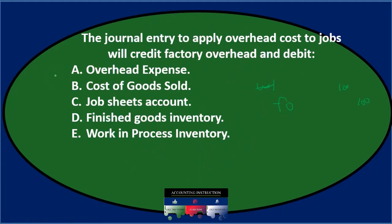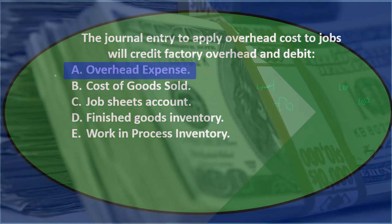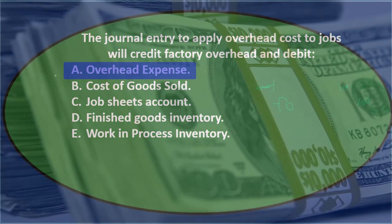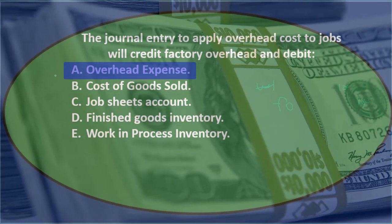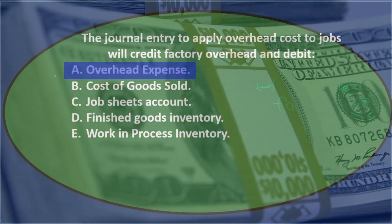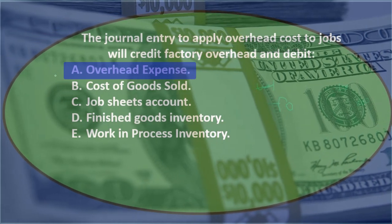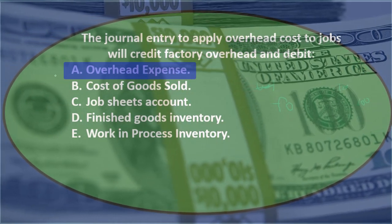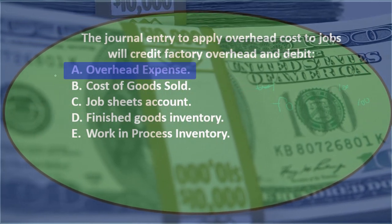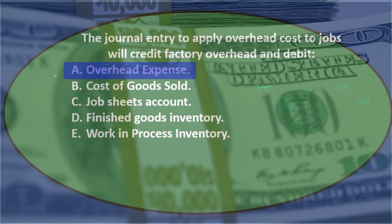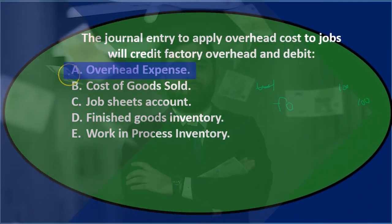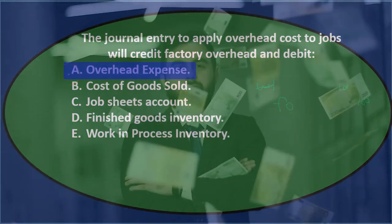A is overhead expense. That might sound reasonable, except there's not really an overhead expense account. Overhead is an account we use to track overhead — we're not going to expense it directly. We put the overhead into inventory, so it goes into work in process, then to finished goods, and then we'll expense it in the form of cost of goods sold. So it's not A.